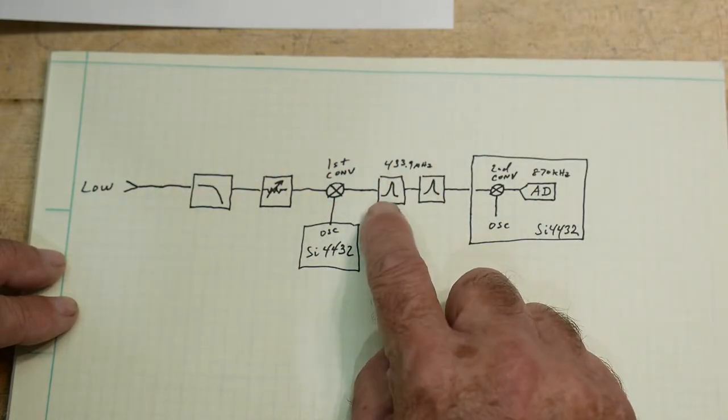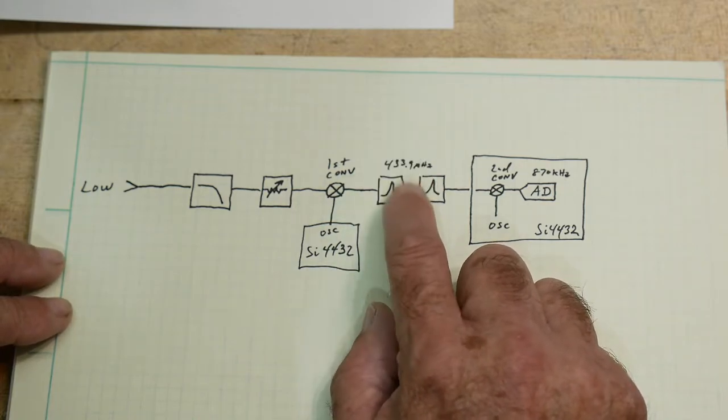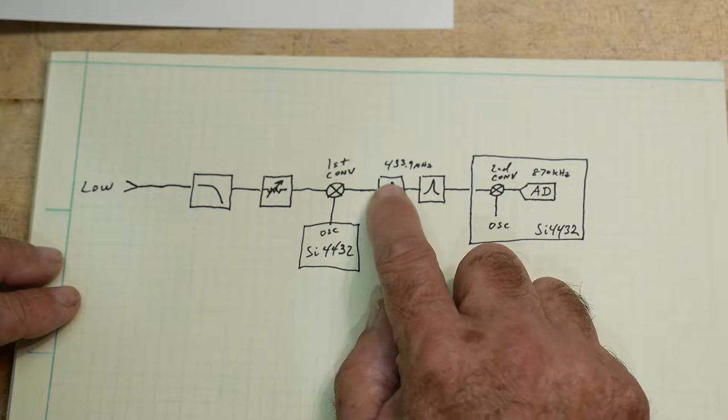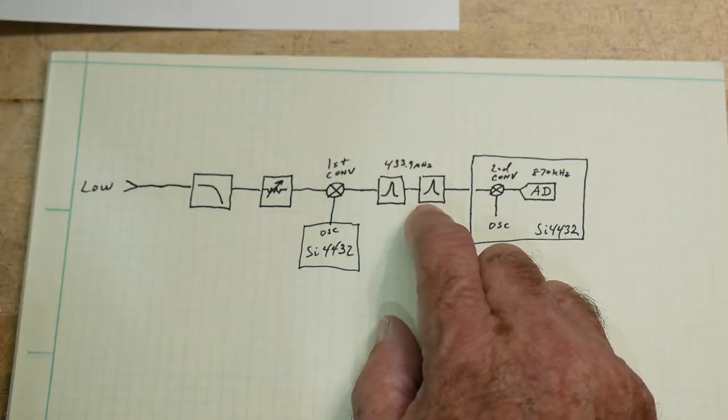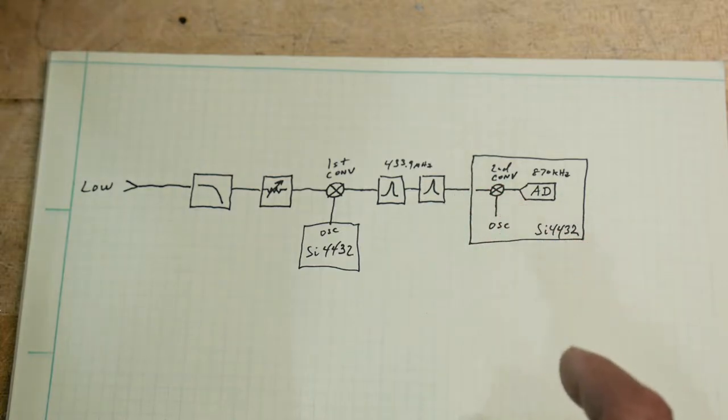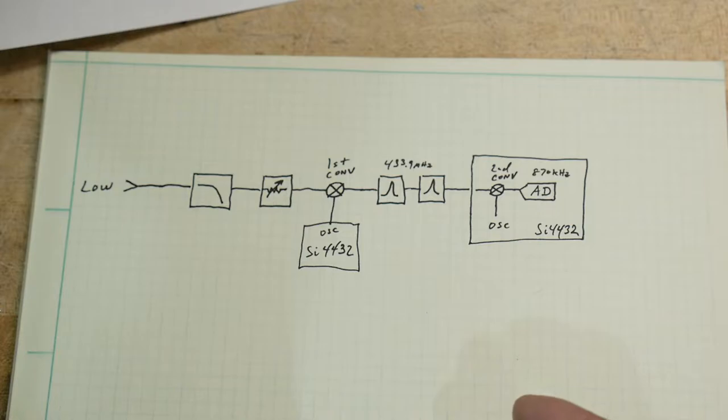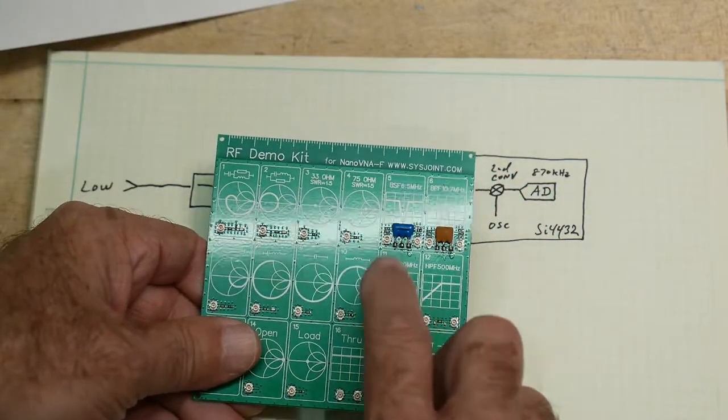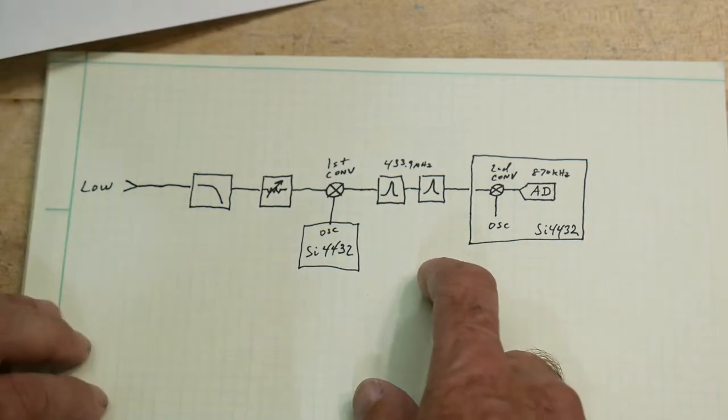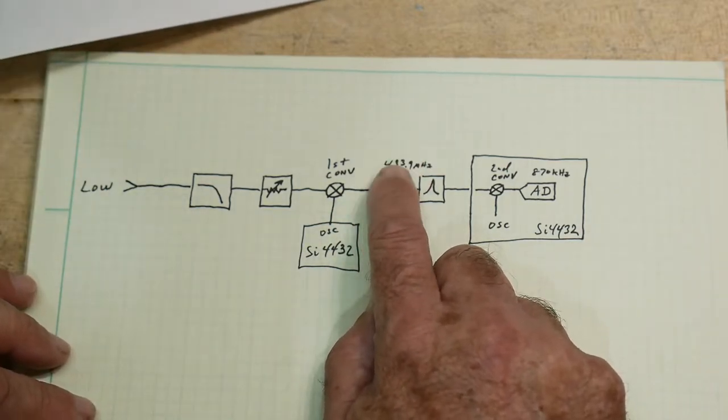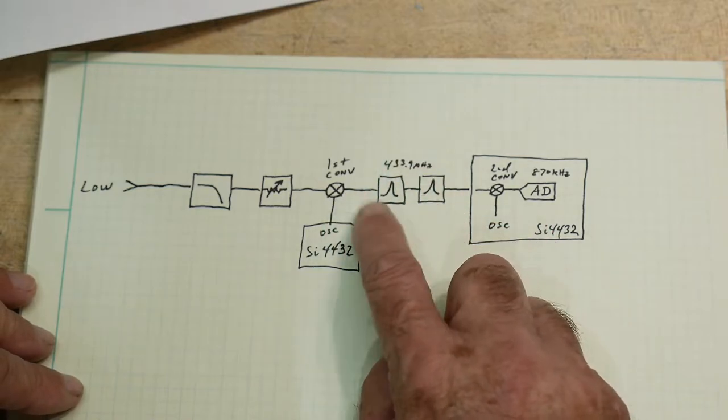And then it goes through a first filter, and this is implemented as some off-the-shelf SAW parts. So a SAW filter followed by a SAW filter. They're the same SAW filter that was found on one of the RF demo kits for the NanoVNA. So those parts must be all over the place. So they reused that part, 433.9 MHz, and they've cascaded two together to give better rejection.